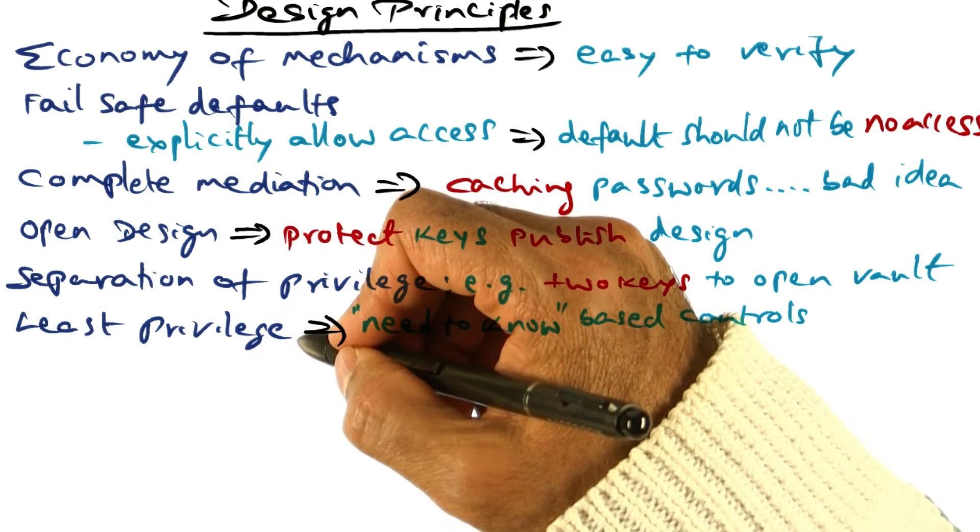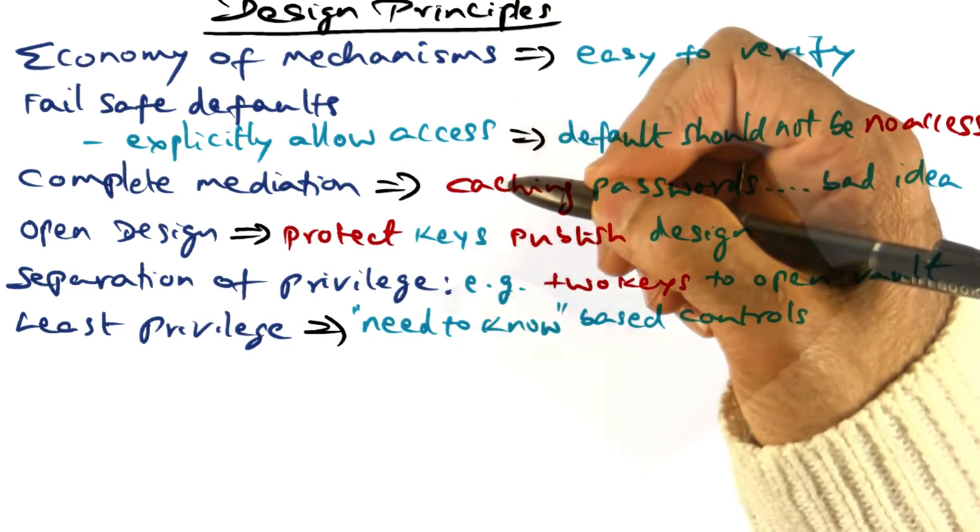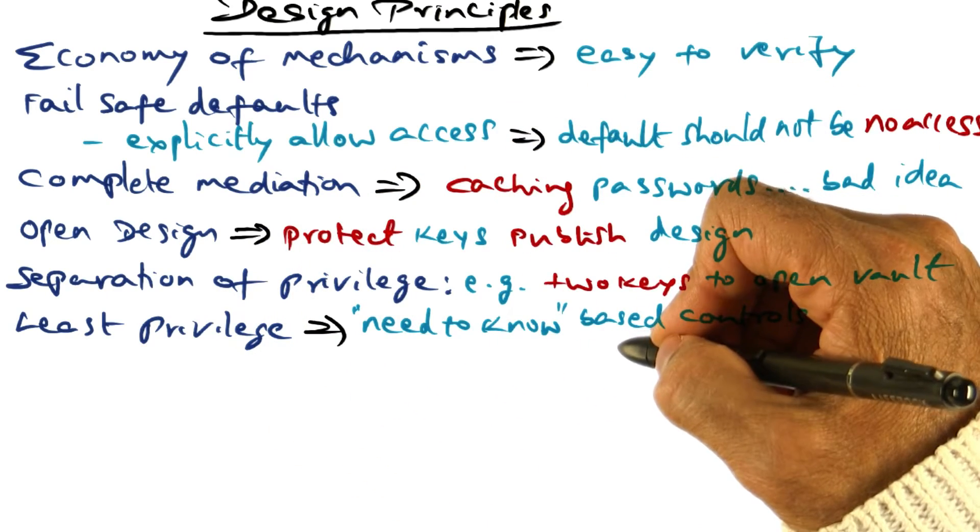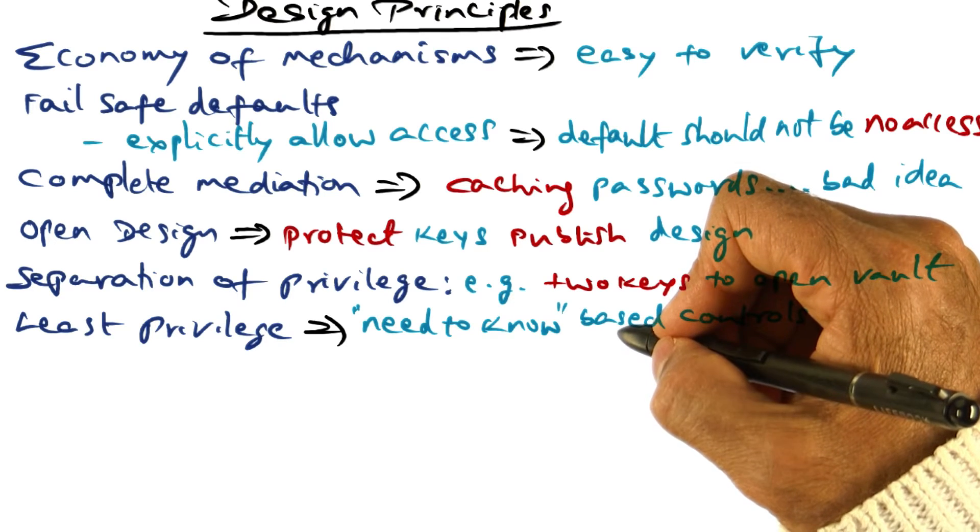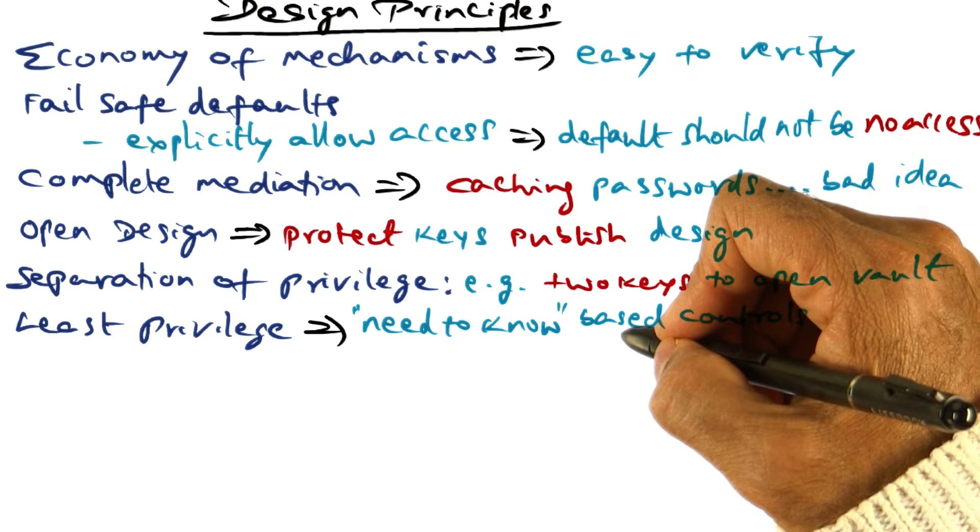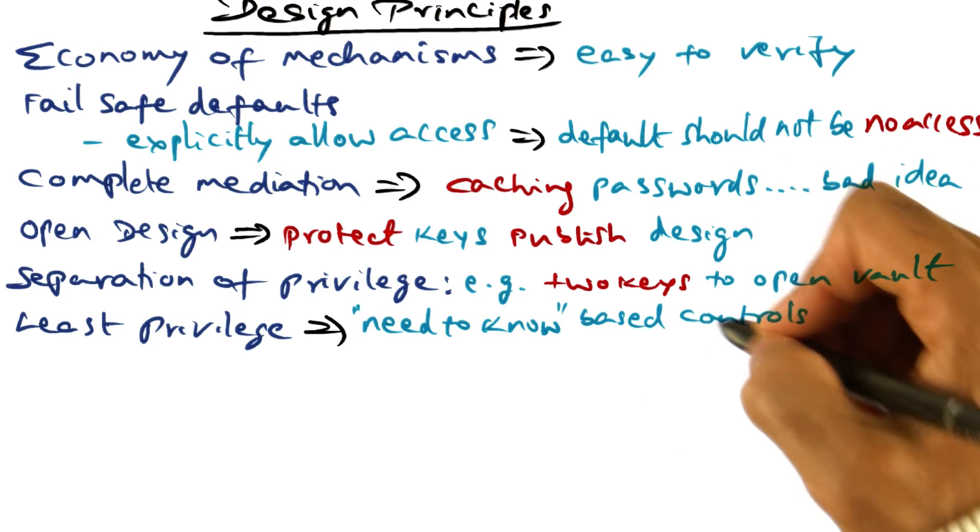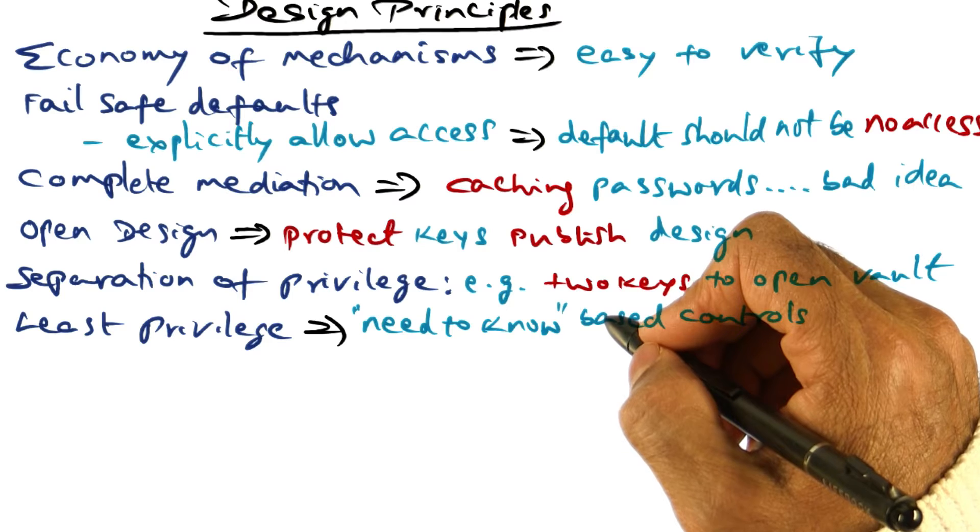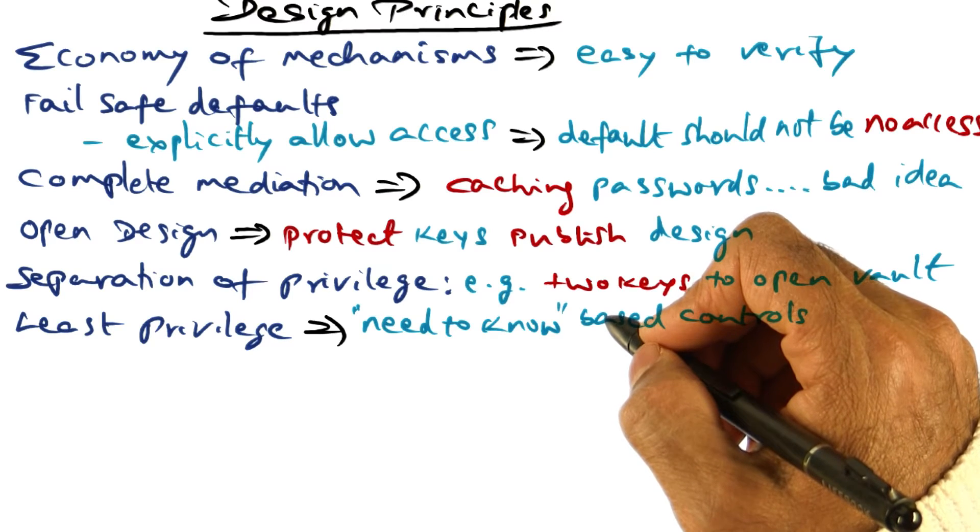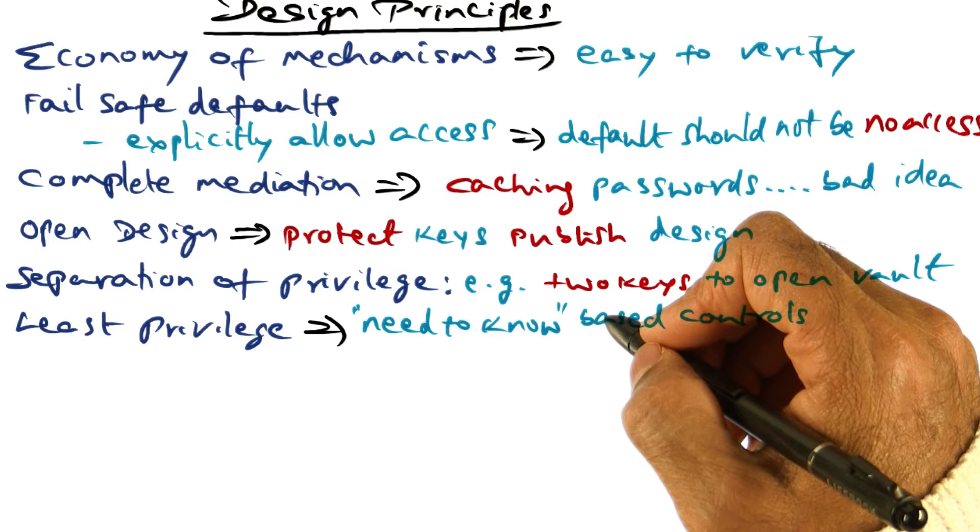The next principle talks about least privilege. That is, we want to use the absolute minimum capability that we need in order to carry out a certain task. So the controls in the system should be based on need to know. An example would be if you want to install certain new pieces of software on your computer.